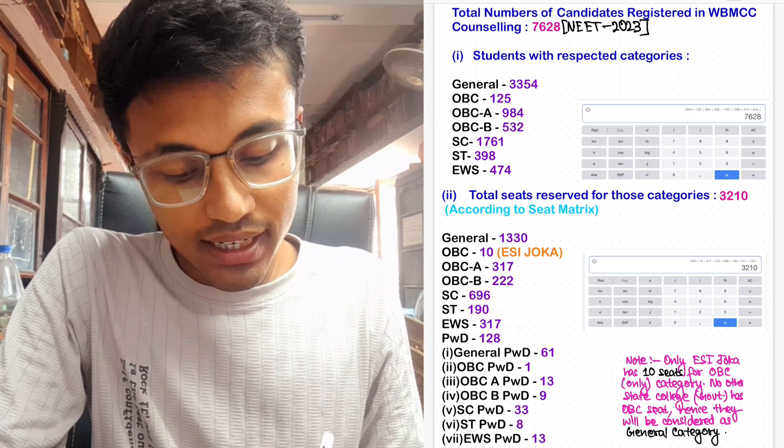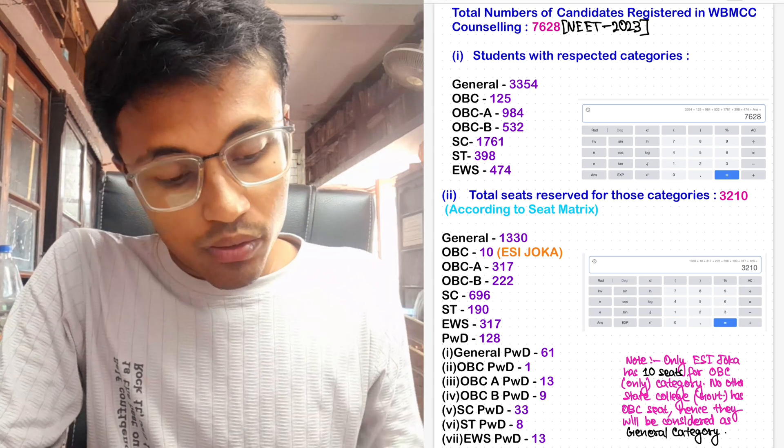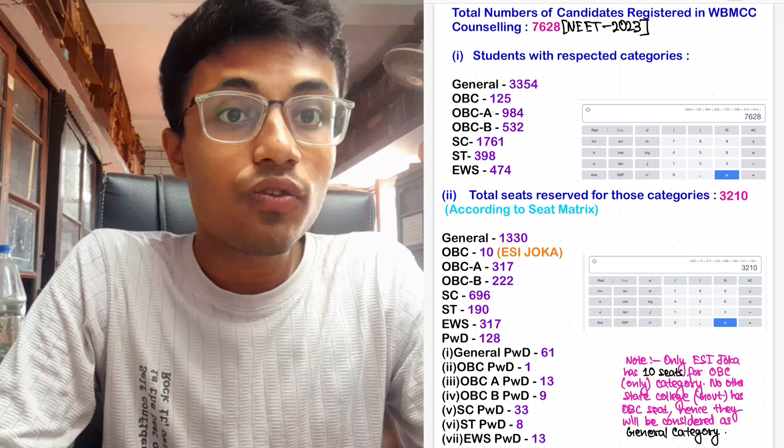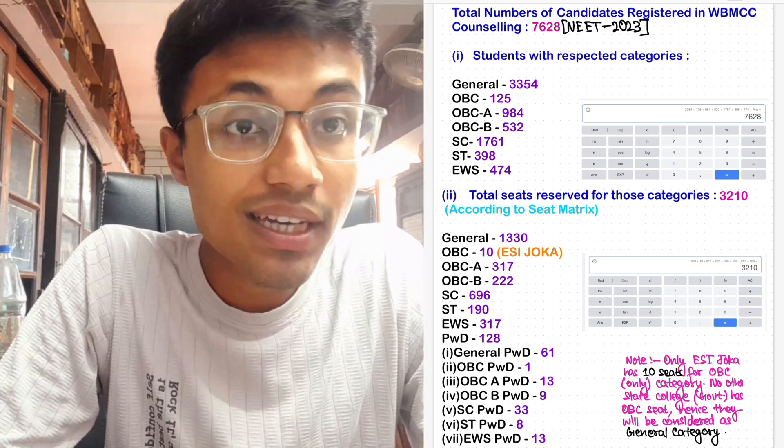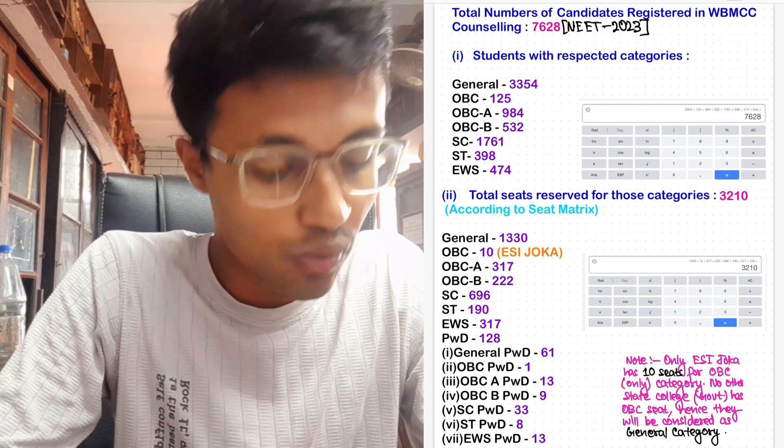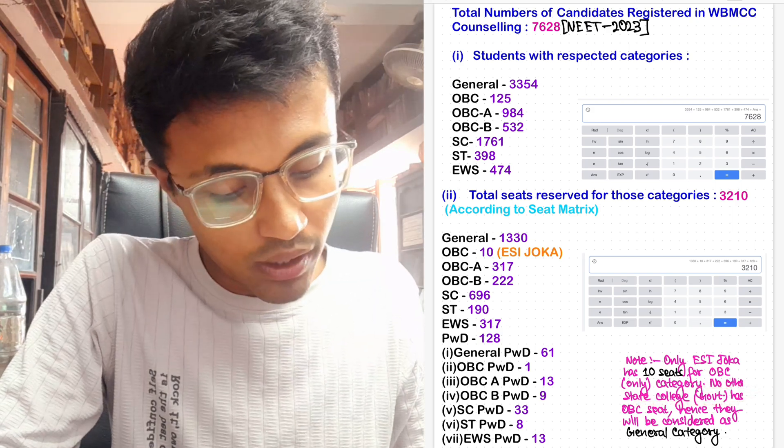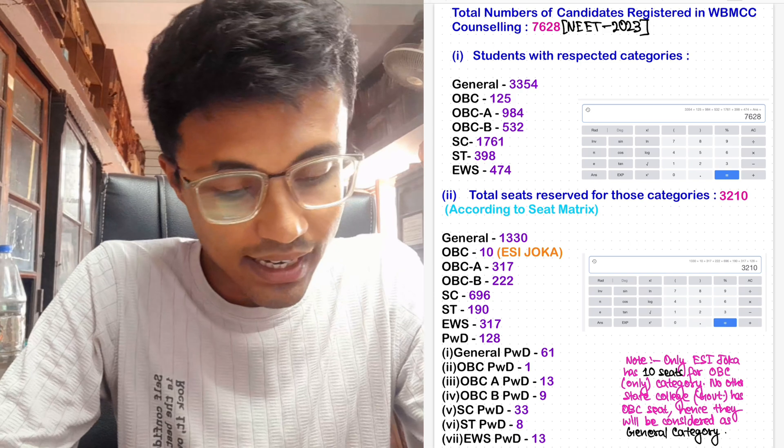Now what is interesting to note is that only ESI Joka, which falls under central government in West Bengal, has 10 seats allotted for OBC-only categories, not OBC-A or B, OBC only. No other state college for government of West Bengal has OBC seats, and these candidates will be considered as general category.